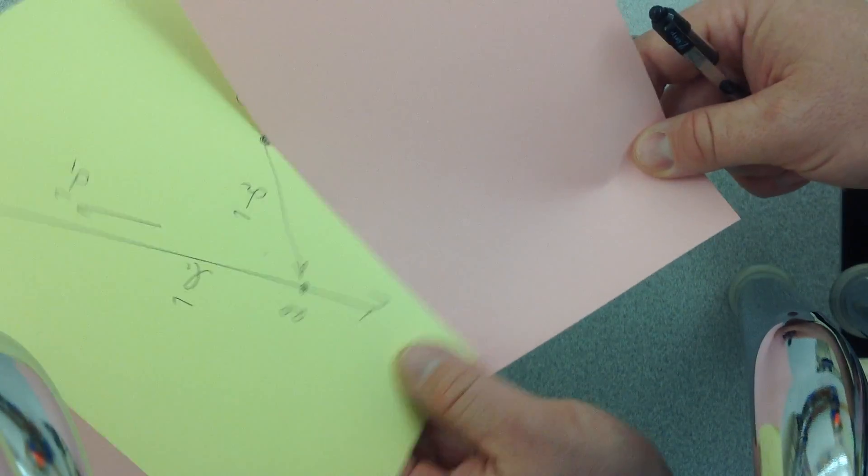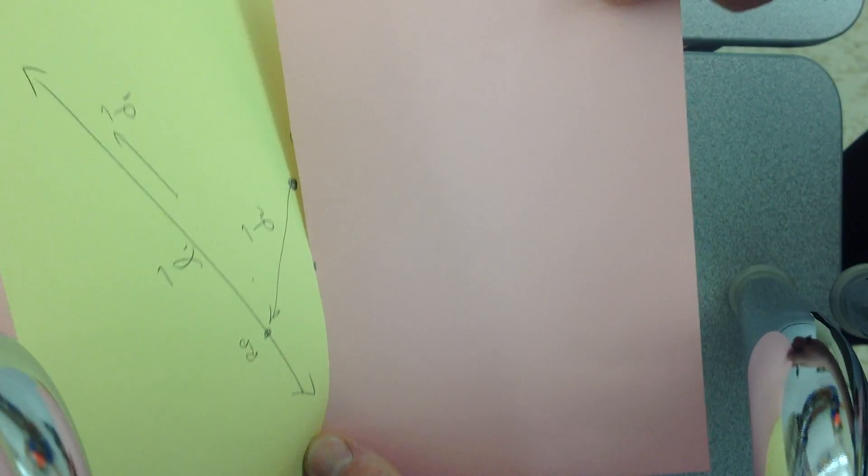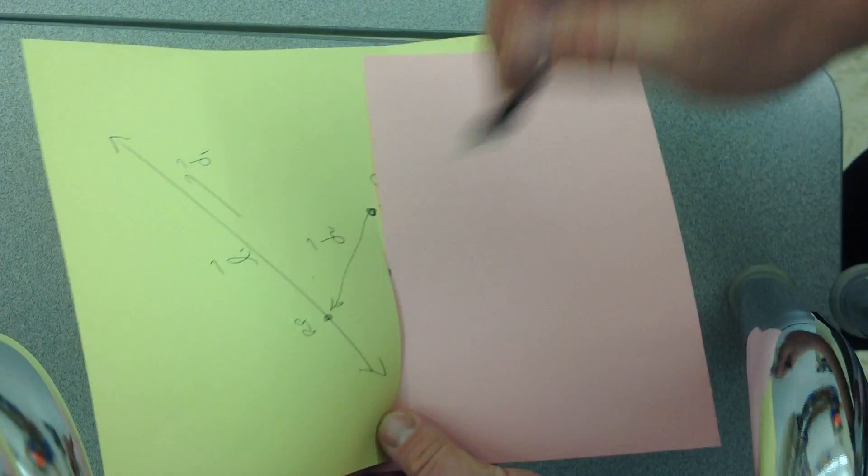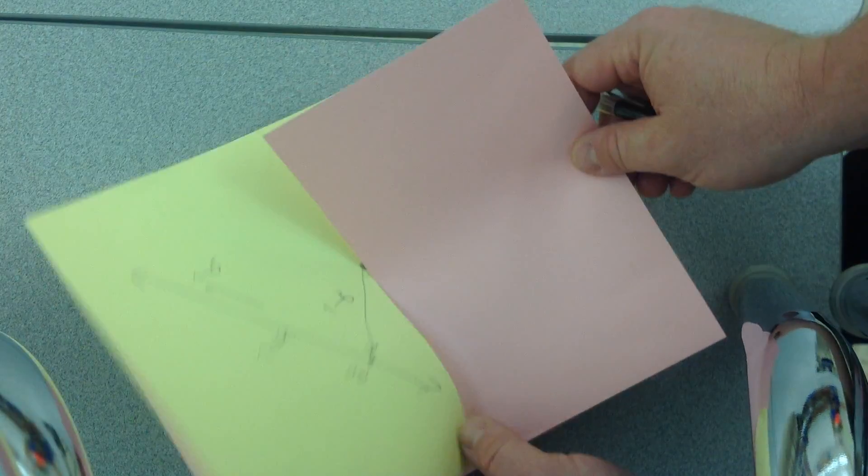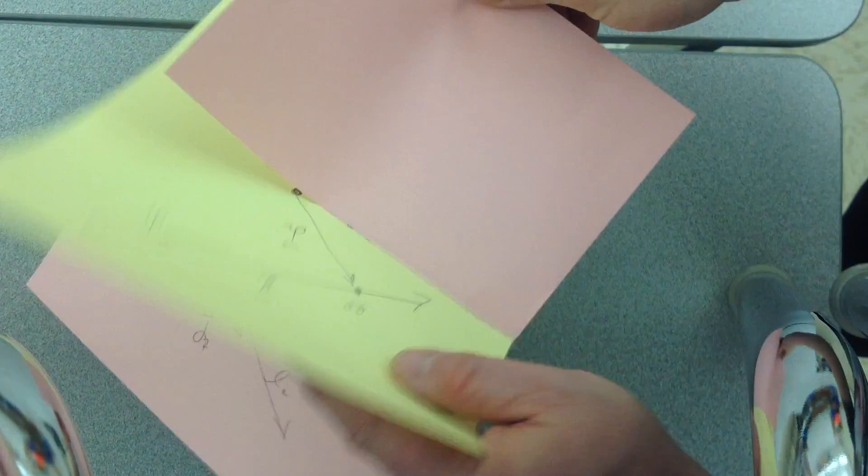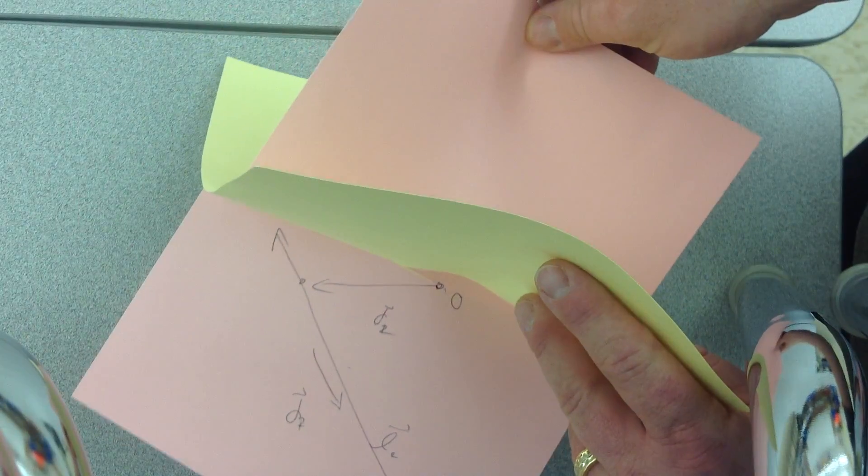You can see that the yellow line will cross into the pink piece of paper and through it. And on my other side here, you can see the pink line is going to do the same thing.